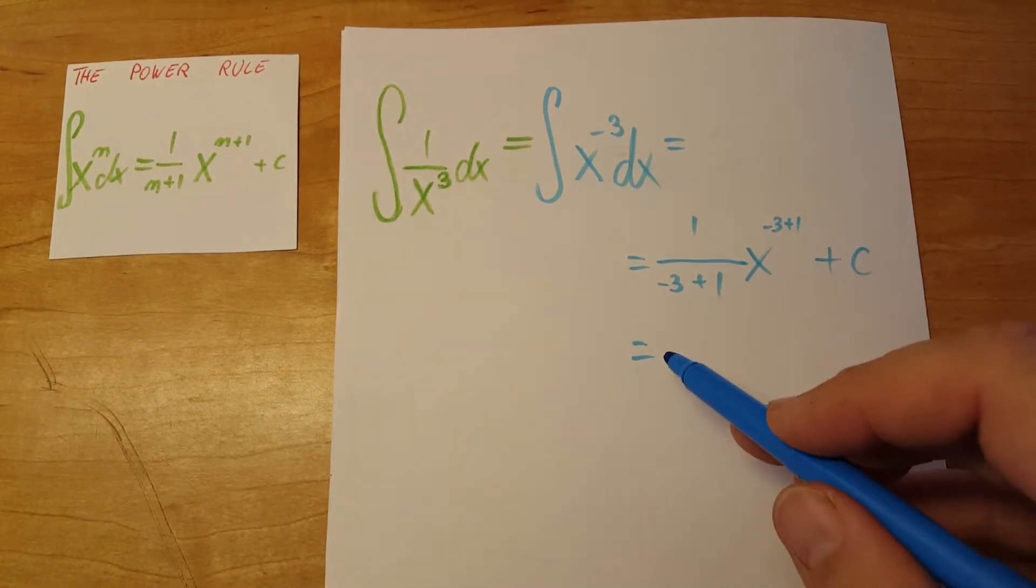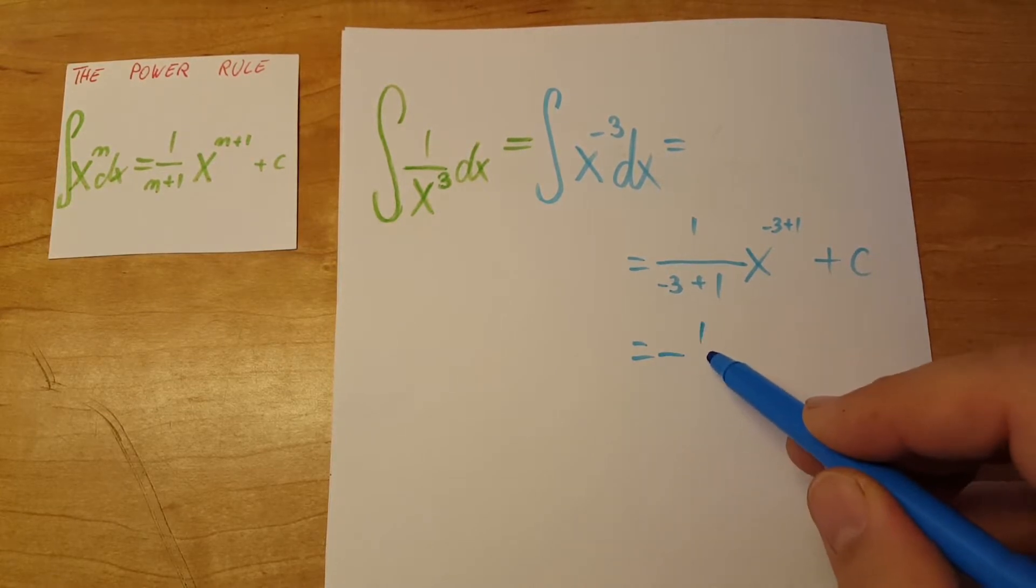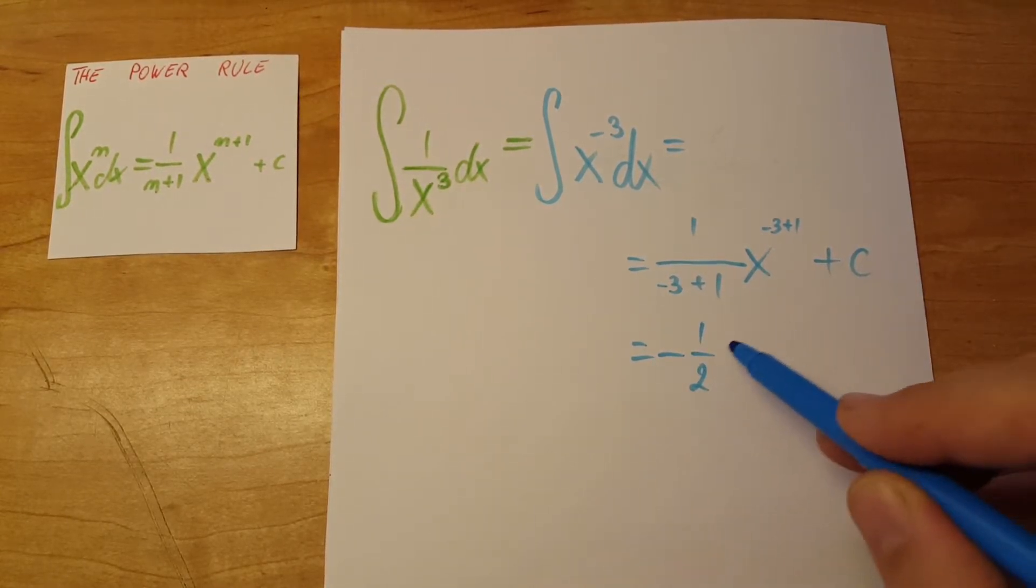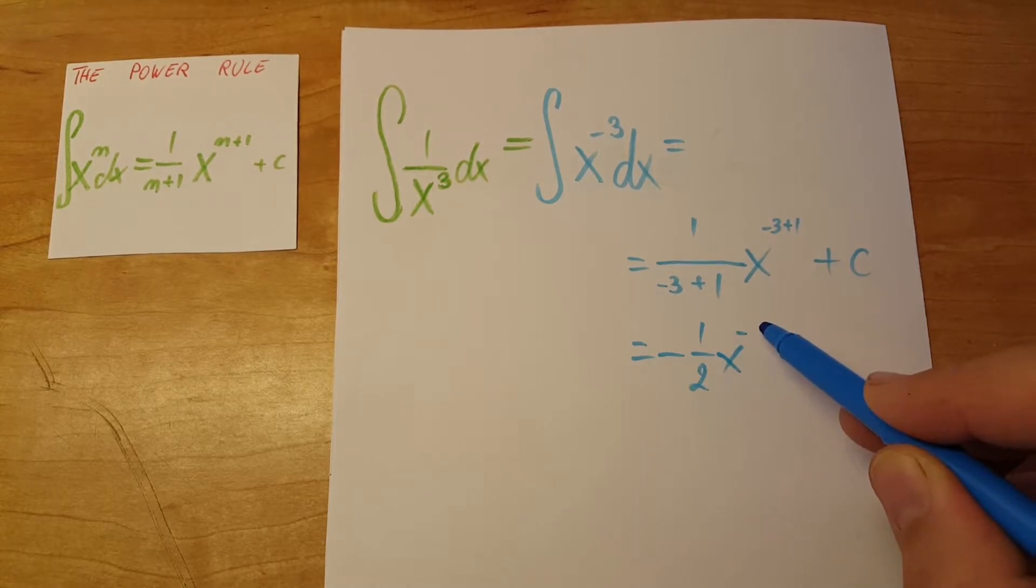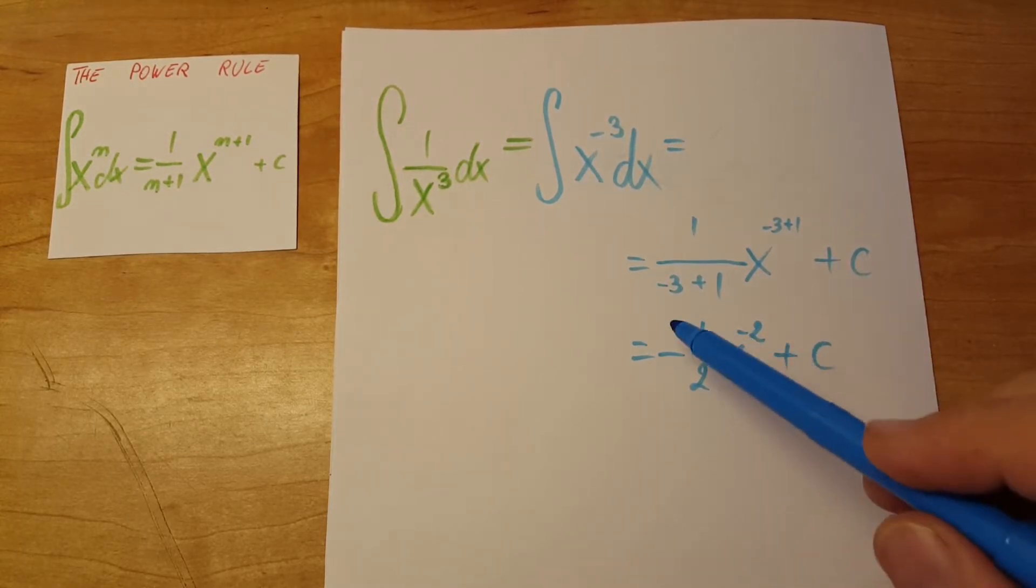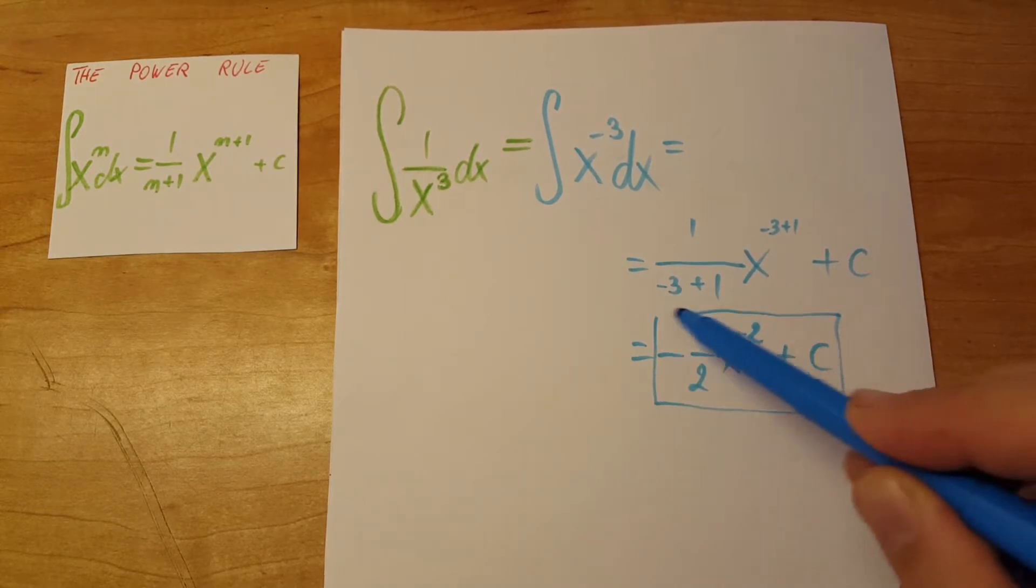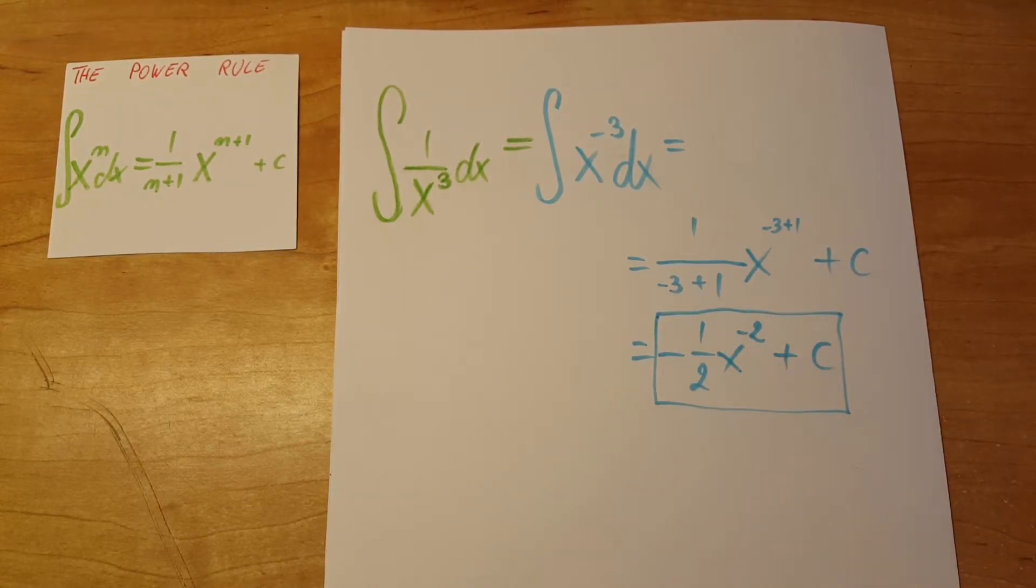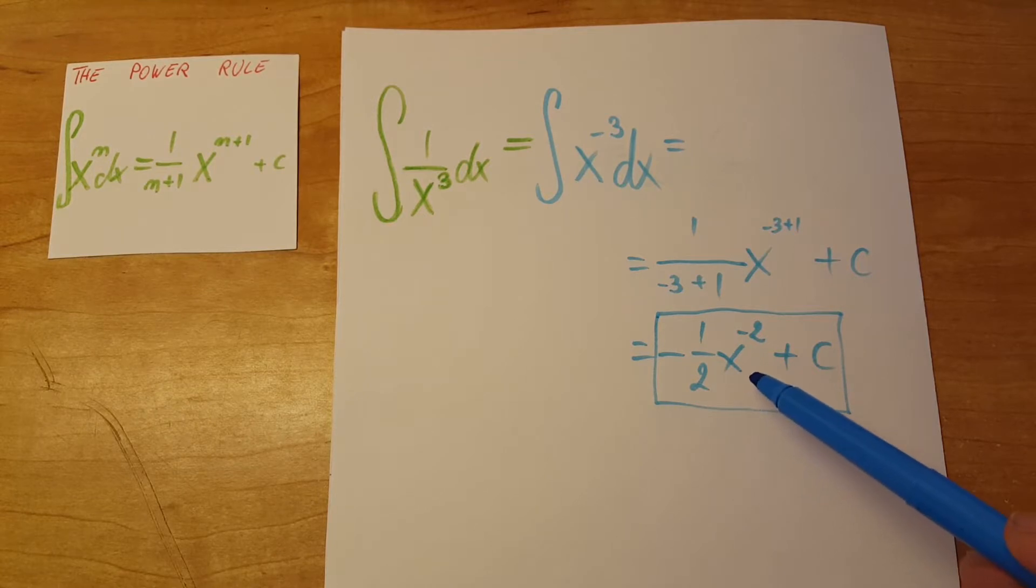Here we're gonna have negative one over two x to the minus two, plus c. That's our answer. You can simplify it even further if you want and turn the negative two into one over x square.